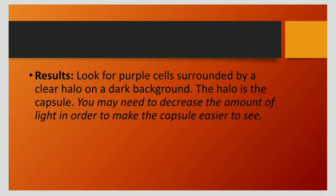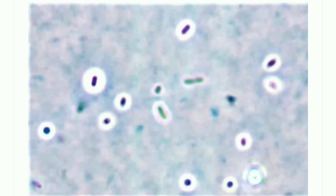Now let us discuss the result of the India ink method. The bacteria appear purple in color due to the crystal violet, whereas the background takes up the color of India ink and appears dark. The capsule appears colorless and can therefore be easily differentiated from the dark background and the purple-colored bacteria. This is the microscopic view of the India ink preparation, showing the capsule as transparent, the bacterial cell as purple, and the background as bluish in color.